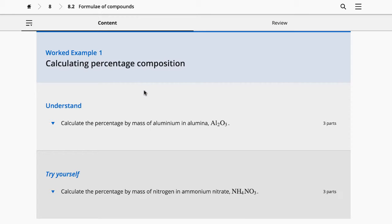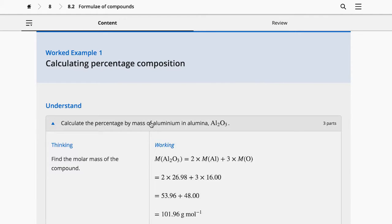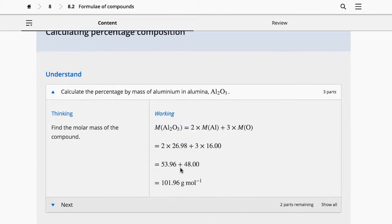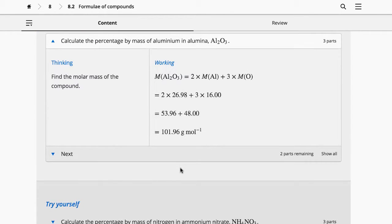Worked examples are a feature that show you how to solve a problem, step by step. On the left is the thinking, which explains the thinking behind each step. On the right is the working, which shows you how to work through the related calculations.